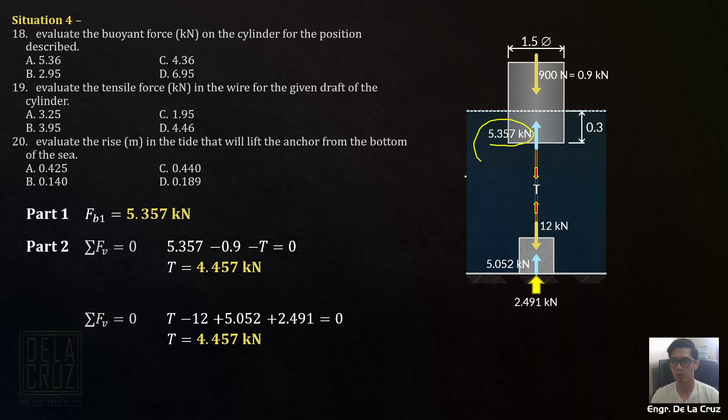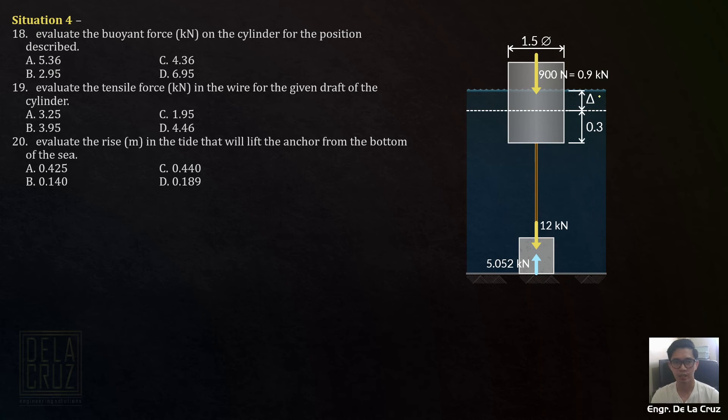Again, what will change here is just this one. The tension will also change, but we don't require the tension. So what's the required rise in tide? Delta. Call it delta. So that the anchor block will be lifted. Again, if it's lifted, there's no more reaction here. That's what happens. That's the principle. Just think, if it's lifted, there's no more contact. So this is now our complete diagram of forces. Aside from that, the buoyant force in this cylinder will change because our volume increased. So you need to get the buoyant force by that condition.